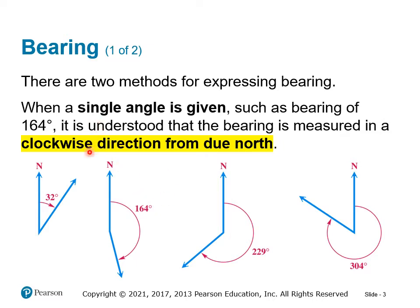So if you think of this as a Cartesian system, we're starting from the positive y-axis — or thinking of a compass, the heading of due north — and measuring clockwise by whatever angle is given. A bearing of 32 degrees starts at north and goes 32 degrees clockwise. A bearing of 229 degrees starts at north, passes the x-axis at 90, passes the negative y-axis at 180, and reaches 229. A bearing of 304 degrees continues past the negative x-axis at 270 to reach 304.